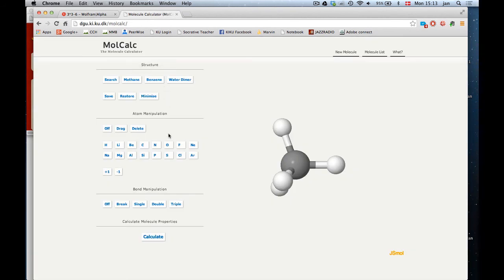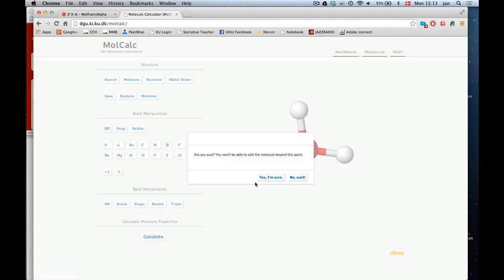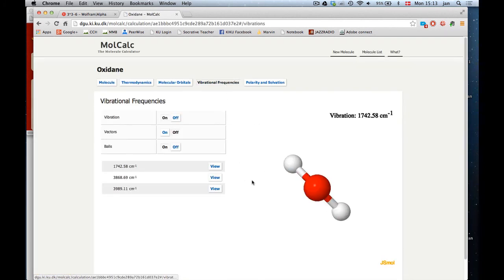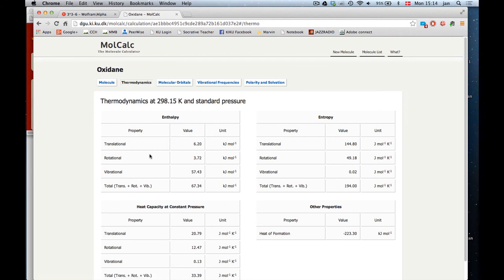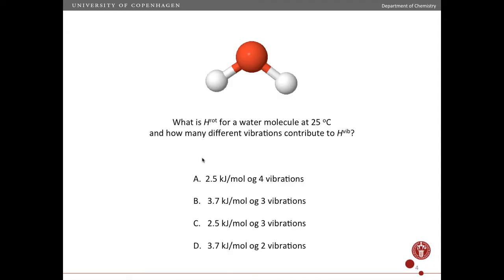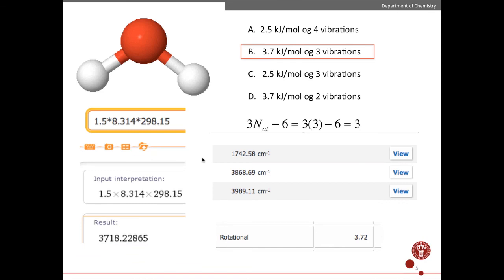Let's verify this using molecular calculator. Let's build water. Here's the water molecule. Calculate. And let's look at the vibrational frequencies. And as you can see, yes, there are three vibrational frequencies. There's this one, this one, and this one. And let's look at the thermodynamics. We ask, what is the rotational enthalpy? And that is 3.72 kilojoules per mole. This is calculated using exactly the same equation as I showed you before. So the answer is B, 3.7 kilojoules per mole for the rotational enthalpy. And three vibrations contribute to the vibrational enthalpy.